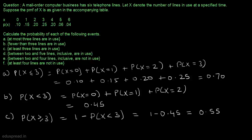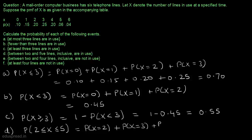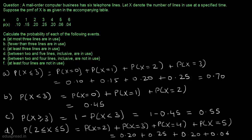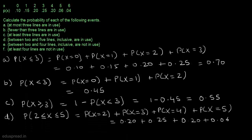In part D, we have to calculate the probability that between two and five lines inclusive are in use. That means we have to calculate the probability that x is between two and five inclusive, so P(x=2) + P(x=3) + P(x=4) + P(x=5) = 0.20 + 0.25 + 0.20 + 0.06 = 0.71.